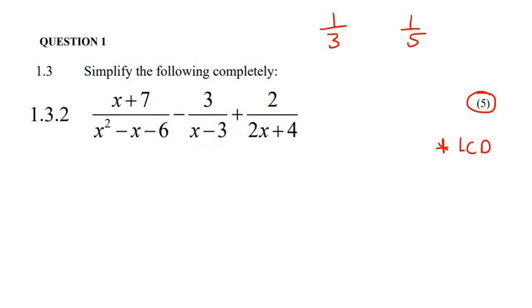Okay, so x plus 7. Now, if you factorize this, it's a trinomial. So let's factorize that over here together. So we look at the number 6. Now, we know that the number 6 can be written as 2 times 3, or 1 times 6.